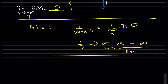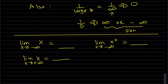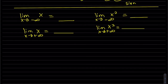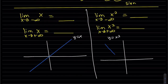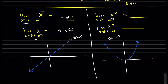Looking at more examples without graphs: y equals x has end behavior where as x goes to negative infinity it goes to negative infinity, and as x goes to positive infinity it goes to positive infinity — plugging in directly. For y equals x squared, both the left and right behaviors go to positive infinity, since two negatives give a positive.